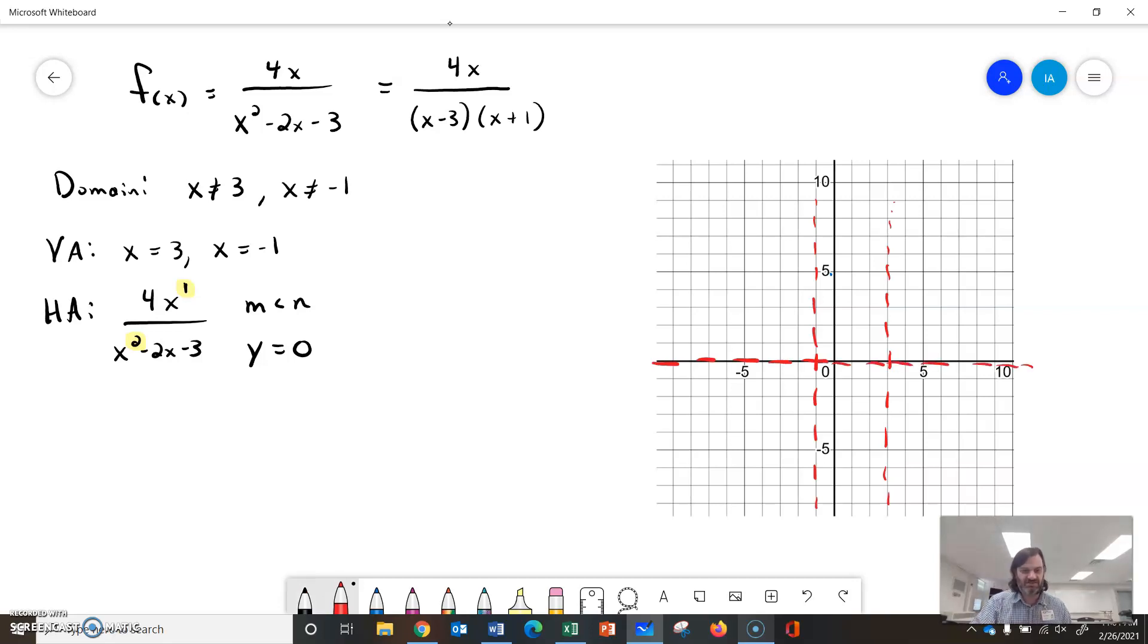Then I can look for intercepts, x and y intercepts. If I look for an x-intercept, I let f(x) = 0, which means I set this equal to 0. I take the numerator, set it equal to 0, and I get 0.